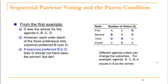Another drawback of this method is that different agenda orders can change the outcome. For example, with the exact same election, if instead we use the agenda D, C, B, A, you can work through that example and see that candidate A will be the winner in that case.